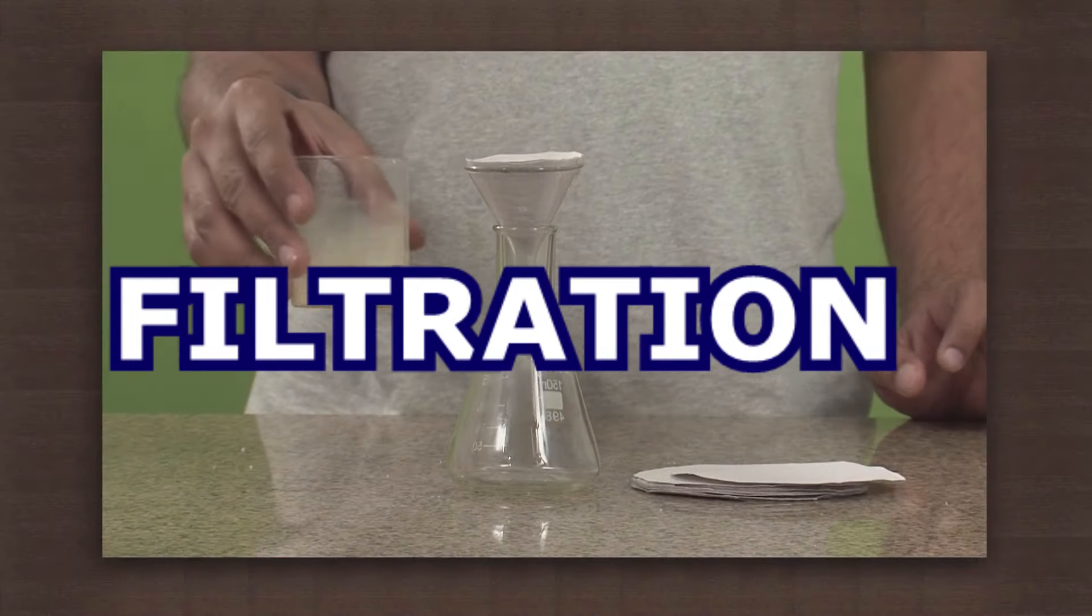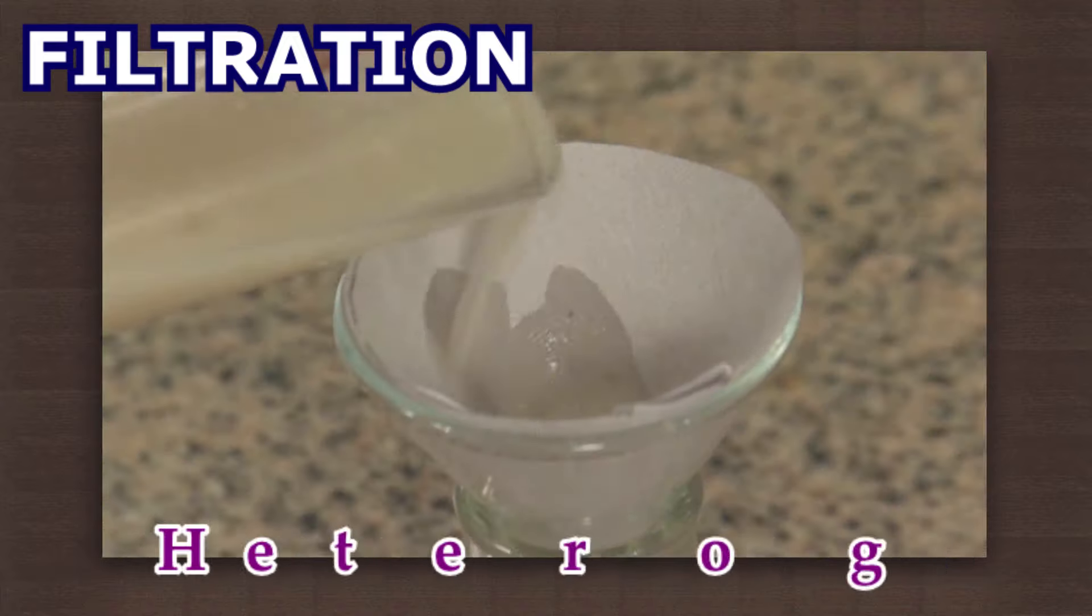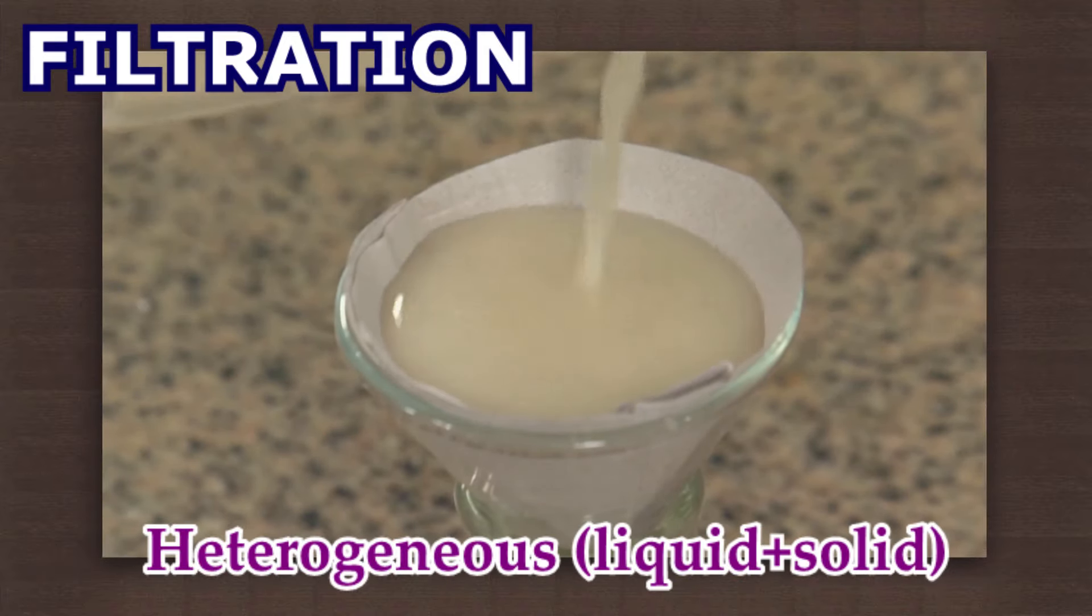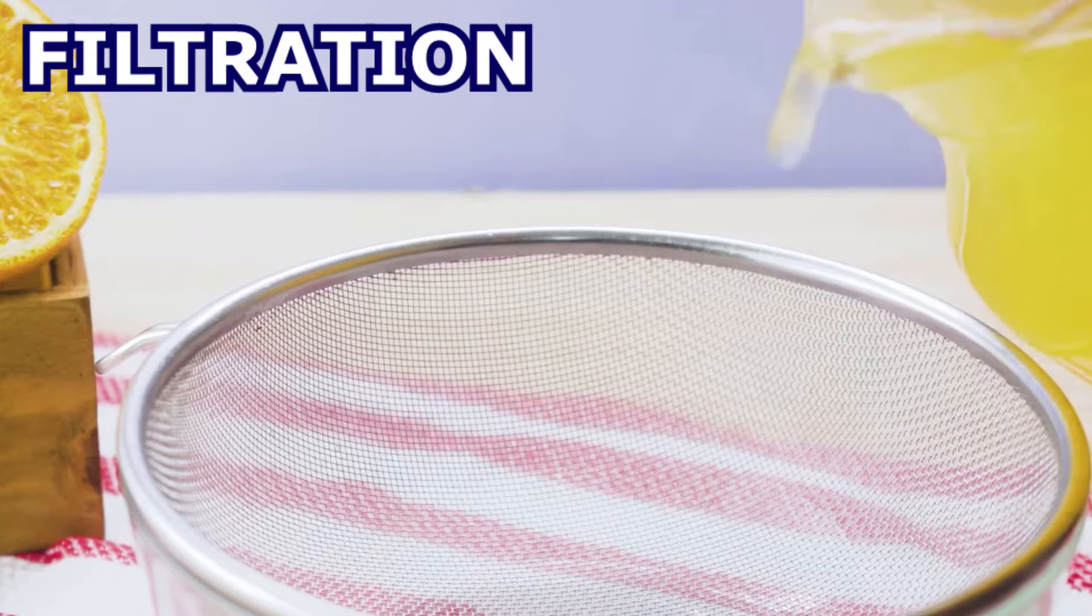Filtration is a method to separate heterogeneous mixtures of a liquid and a solid, for example, orange juice and pulp.